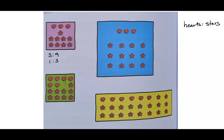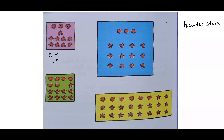How about the blue sheet? Our goal is to identify the ratio of hearts to stars. What is it, Ashley? Great job — did you start with 3 to 12 and then get to 1 to 4? Yes — three to twelve, simplified to one to four.